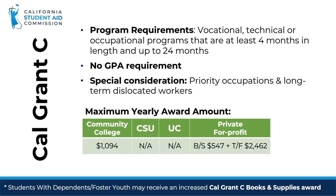If a student is not eligible for a Cal Grant A or B, they could still be considered for a Cal Grant C if they enroll in an occupational or technical program of at least four months in length. Students still must meet all income and asset requirements and have financial need. Unlike Cal Grant A or B, Cal Grant C has no GPA submission requirement.